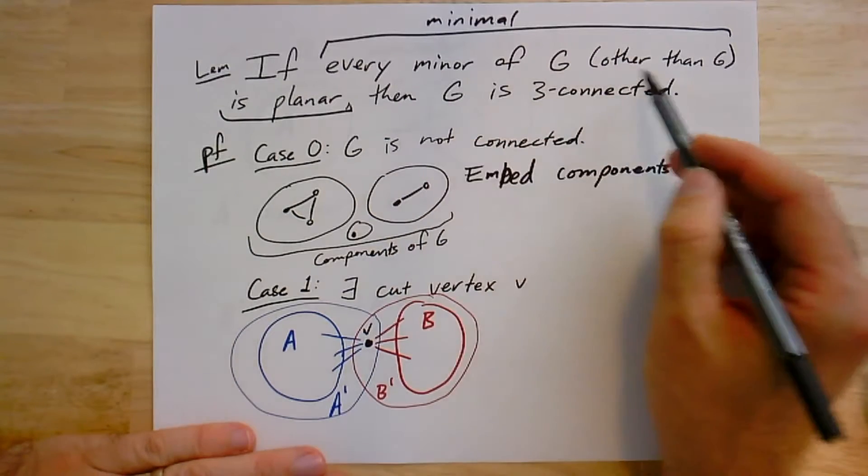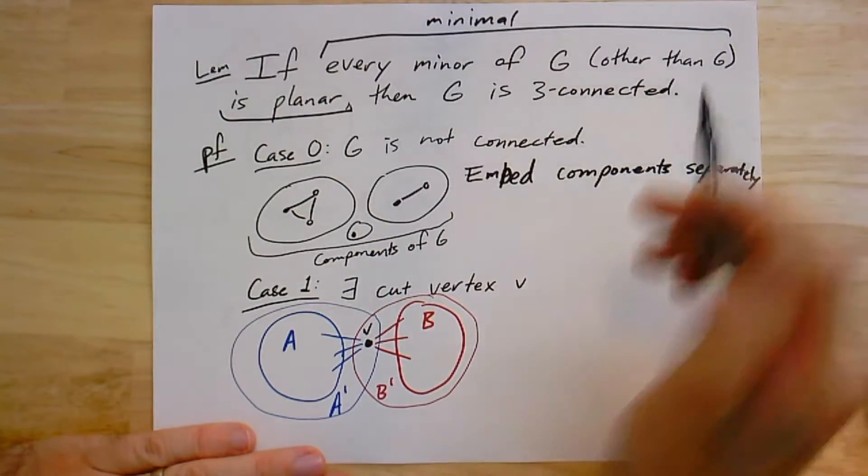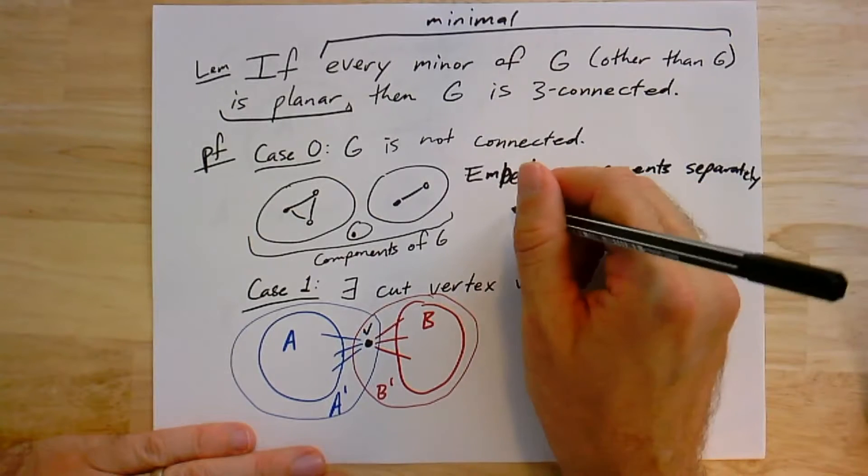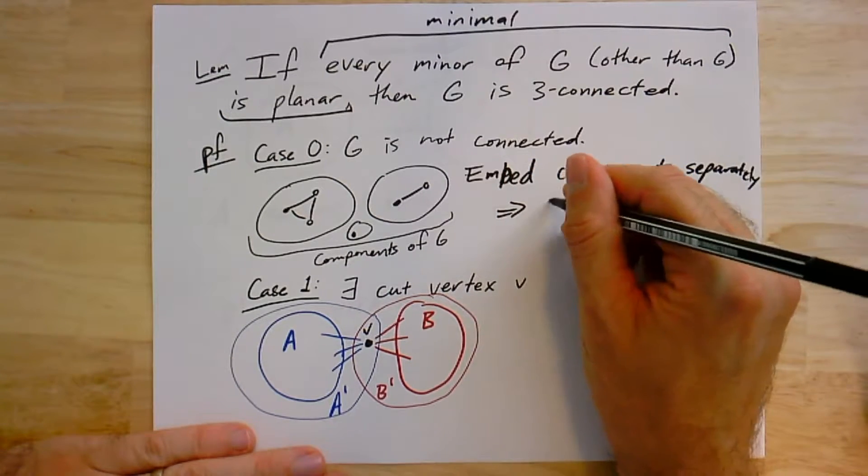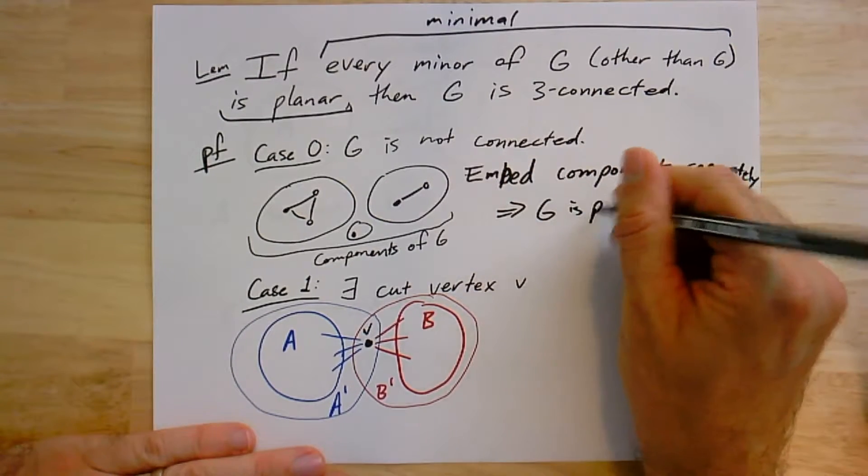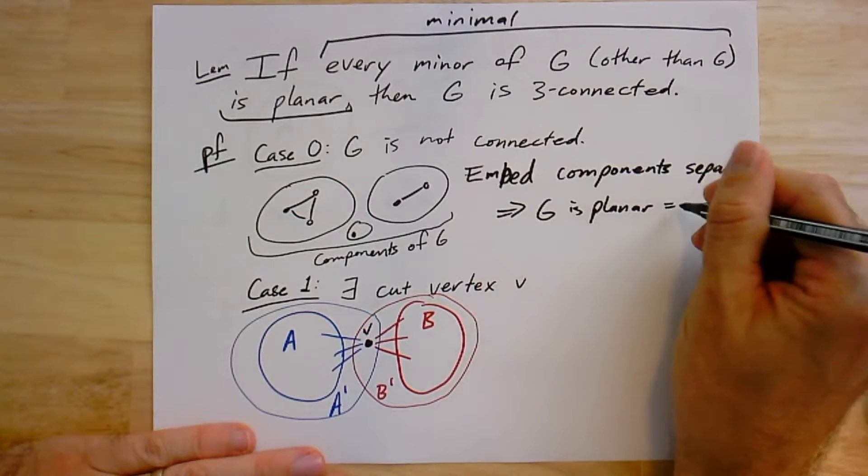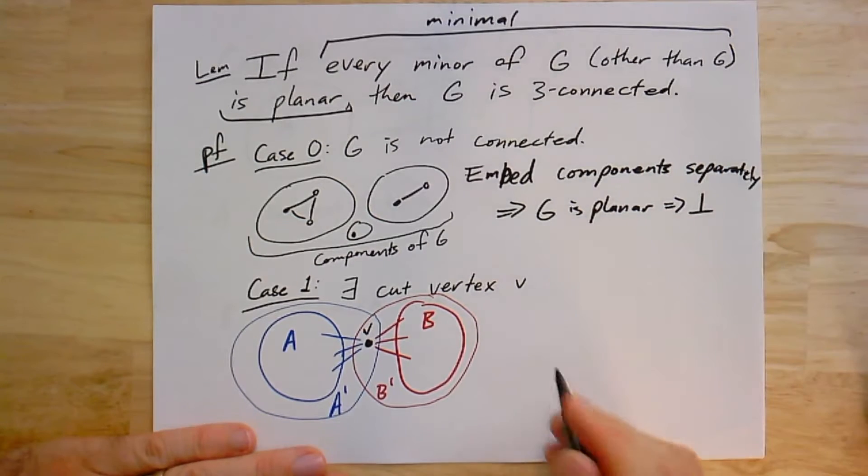Hopefully it was clear that when I write this, I mean that G itself is non-planar. So this gives me an embedding, which implies that G is planar because I had an embedding, which is a contradiction. We said it was not.